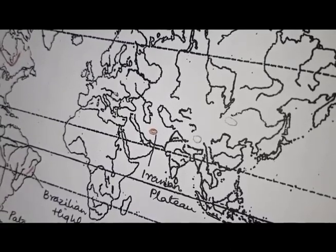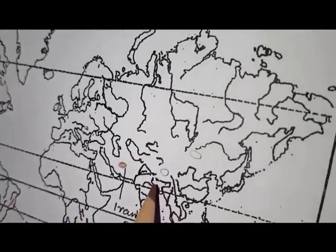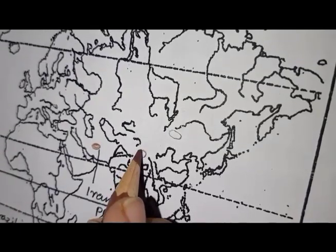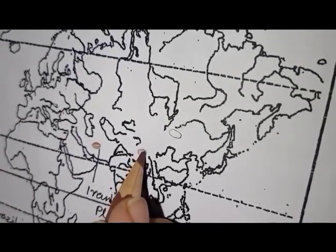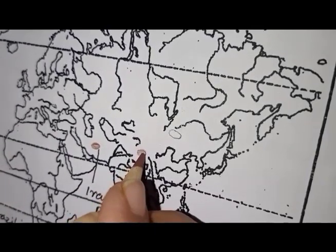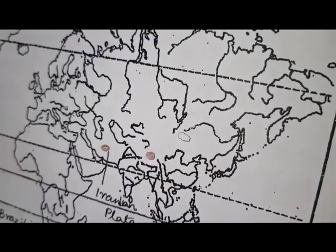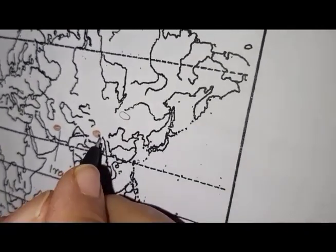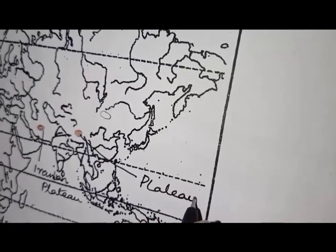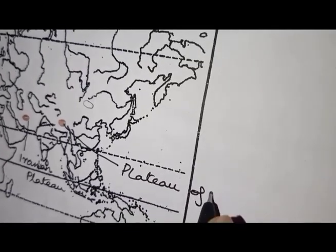Next we have the Plateau of Tibet. Here we have Brahmaputra. Just above that, it should not touch any of the rivers. So this has to be labeled as the Plateau of Tibet.